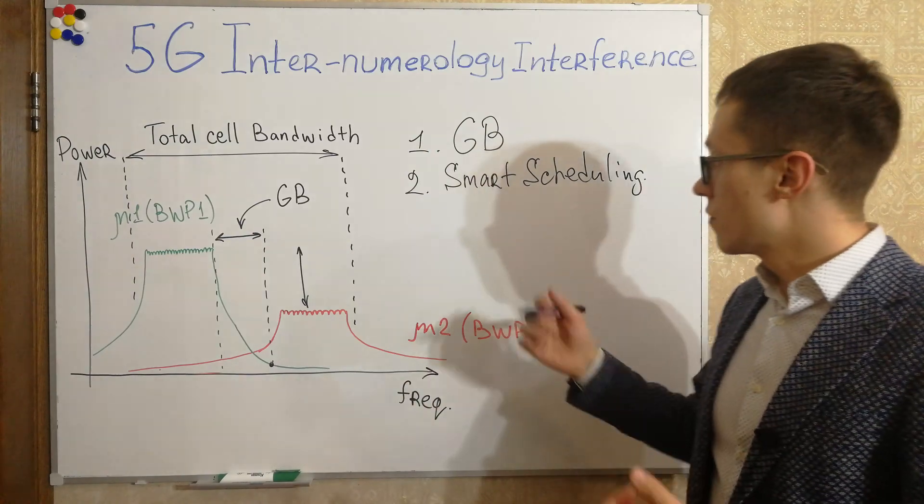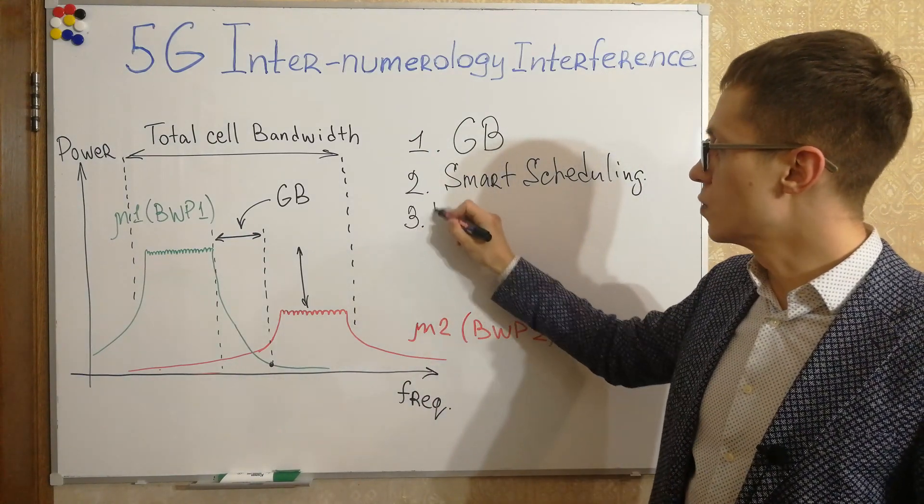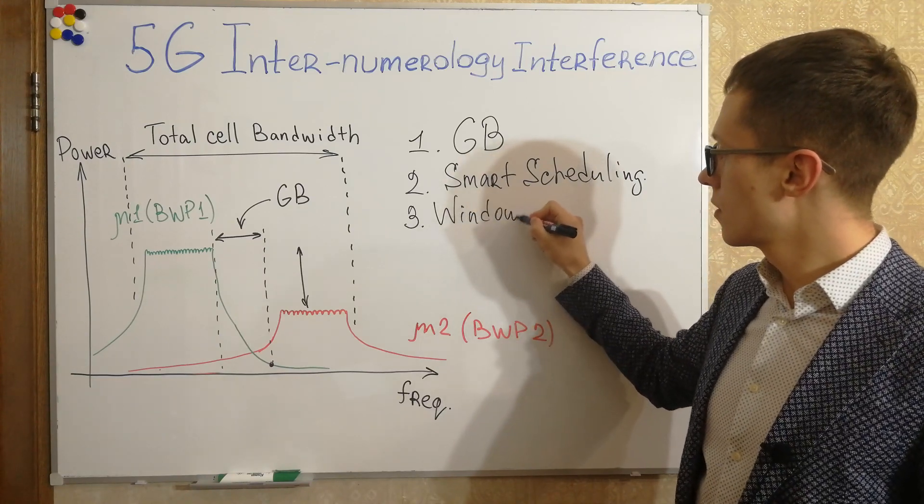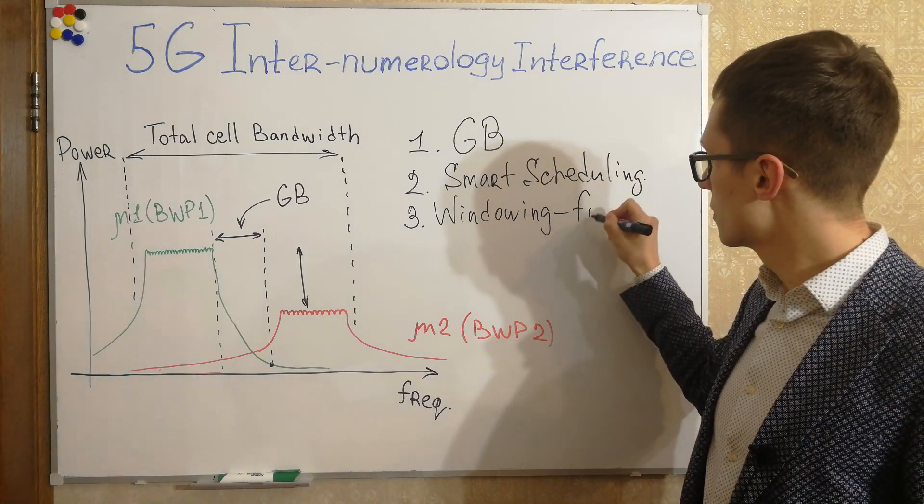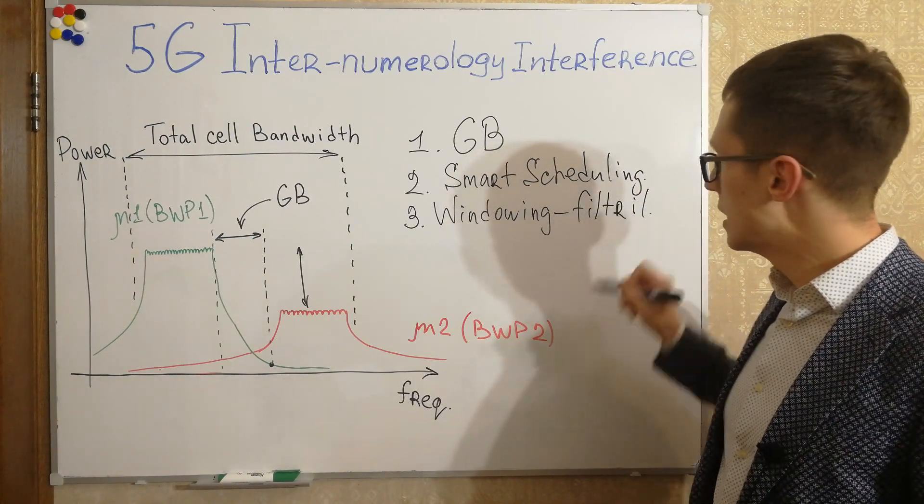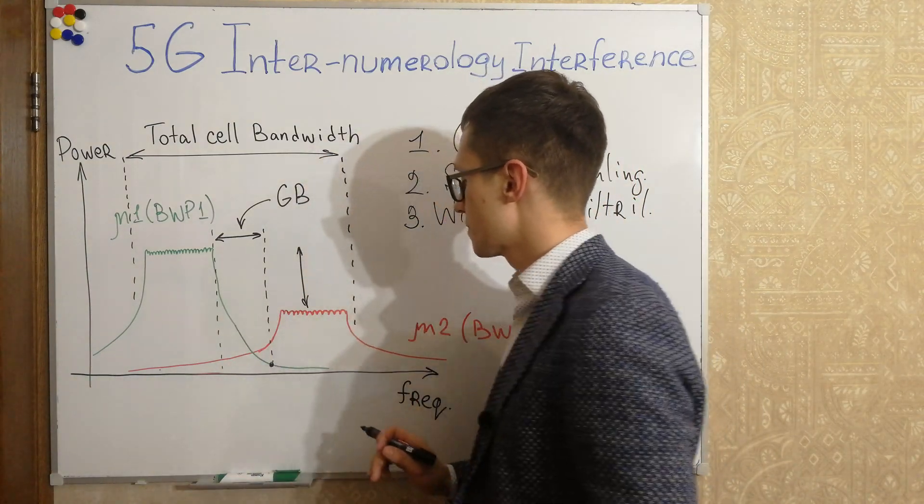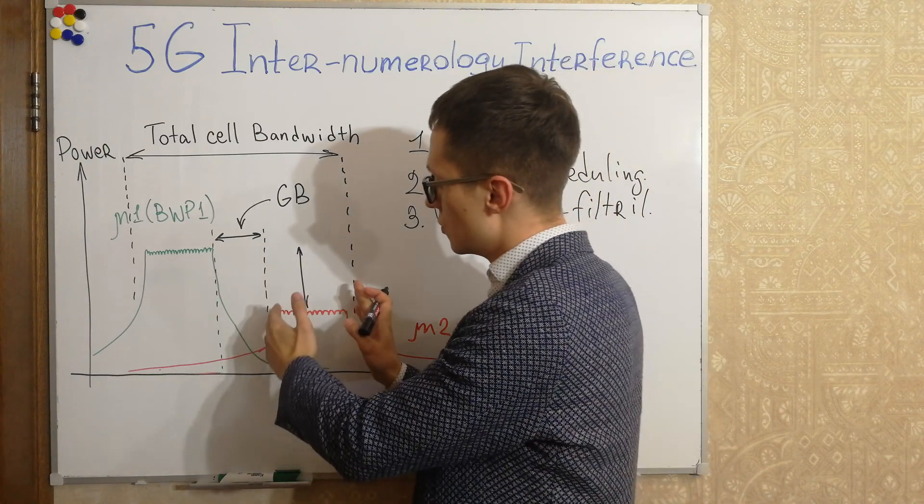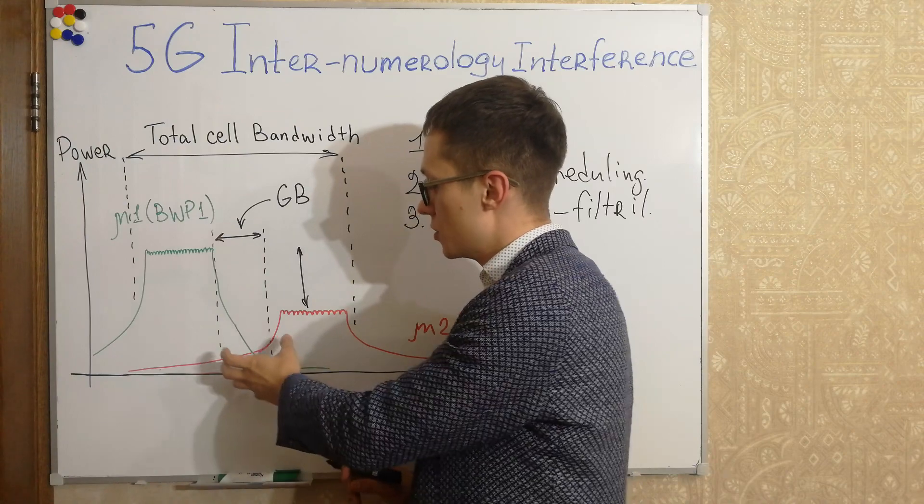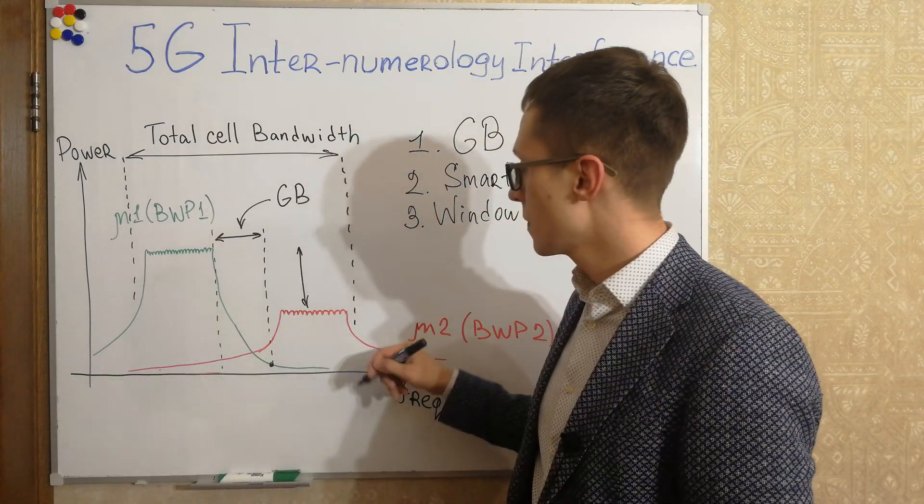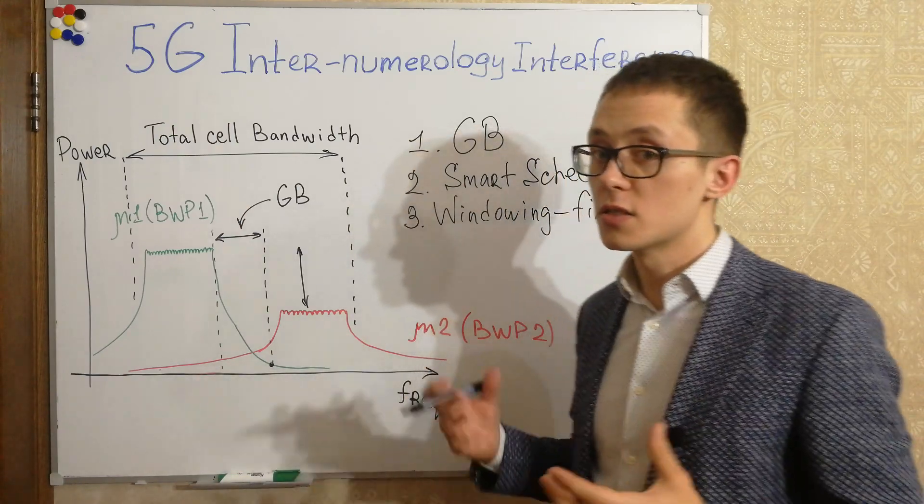So this is one of the possible solutions and the third possible solution is windowing, filtering. It's to use more precise filtering techniques in order to avoid large overlapping areas here, in order to avoid interference. So additional sub-filters can be applied as a solution.